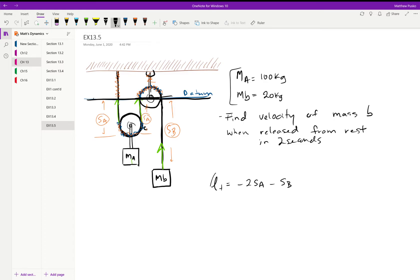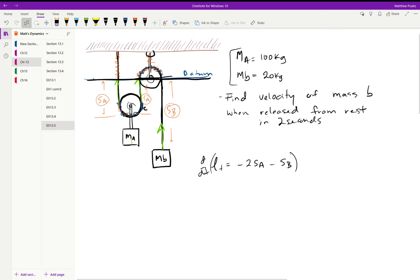Then I'm going to take derivatives all the way to acceleration, even if I don't need it, because that's one place I see students make the mistake. Doing so gives me zero is equal to negative two times velocity A minus the velocity of B. Let's take a derivative again to get the acceleration.